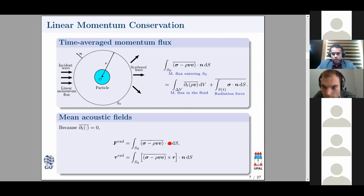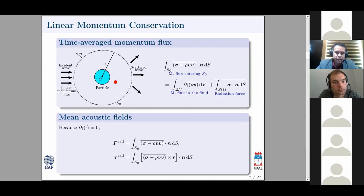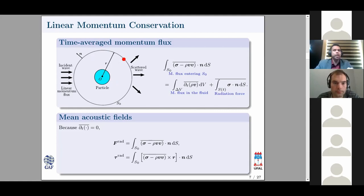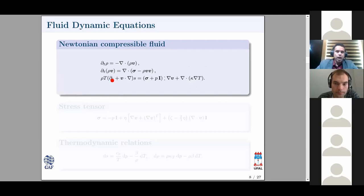A question from Iliadiri: why does the integration surface depend on time if it can be chosen arbitrarily? The control surface S-sub-zero is fixed in the laboratory frame, while the particle can move or deform under the action of incident momentum — that's why the particle surface may depend on time. The trick is to use conservation of momentum: instead of integrating over the moving particle surface, I integrate over the fixed control surface, so I don't need to track the particle's movement.